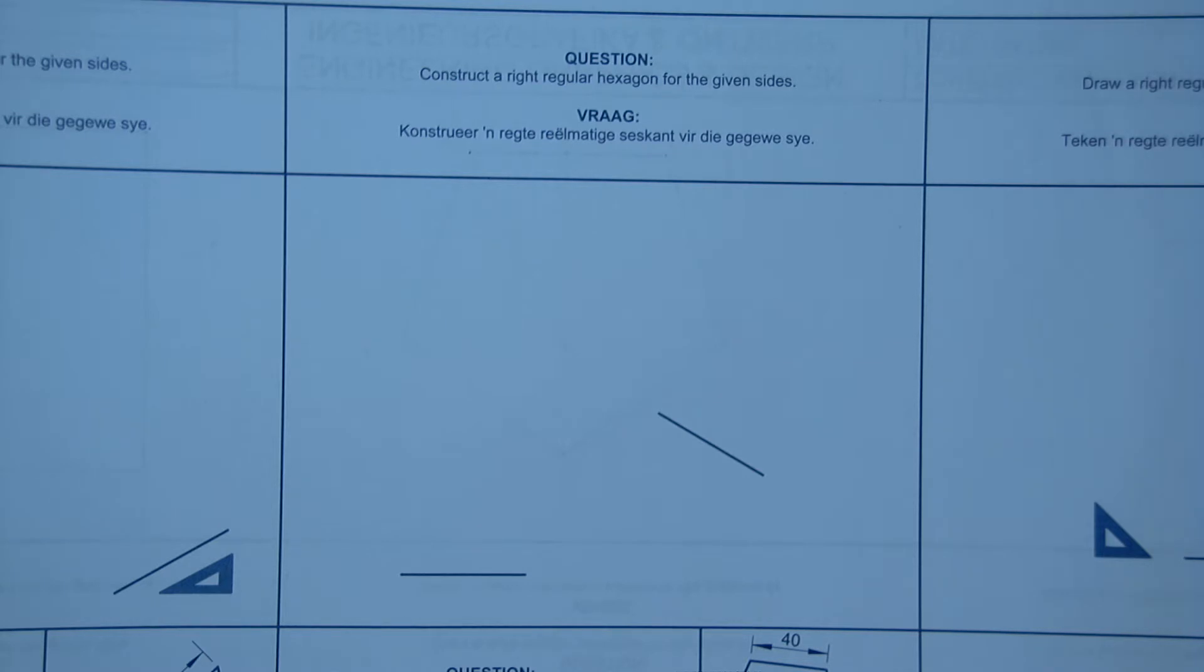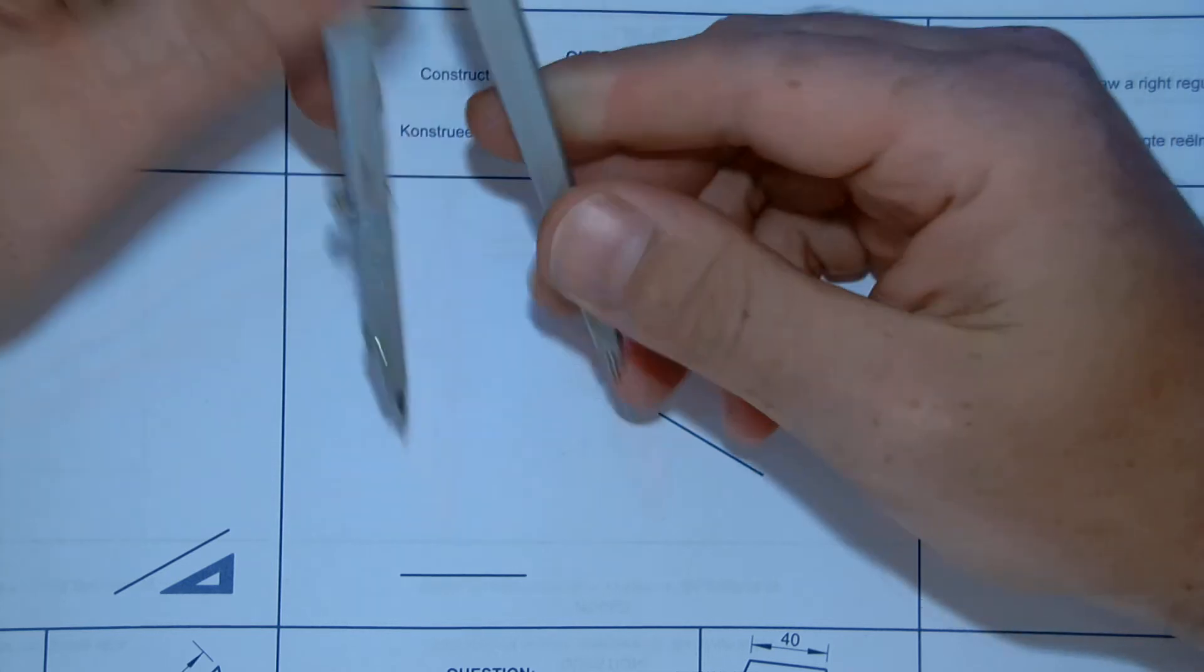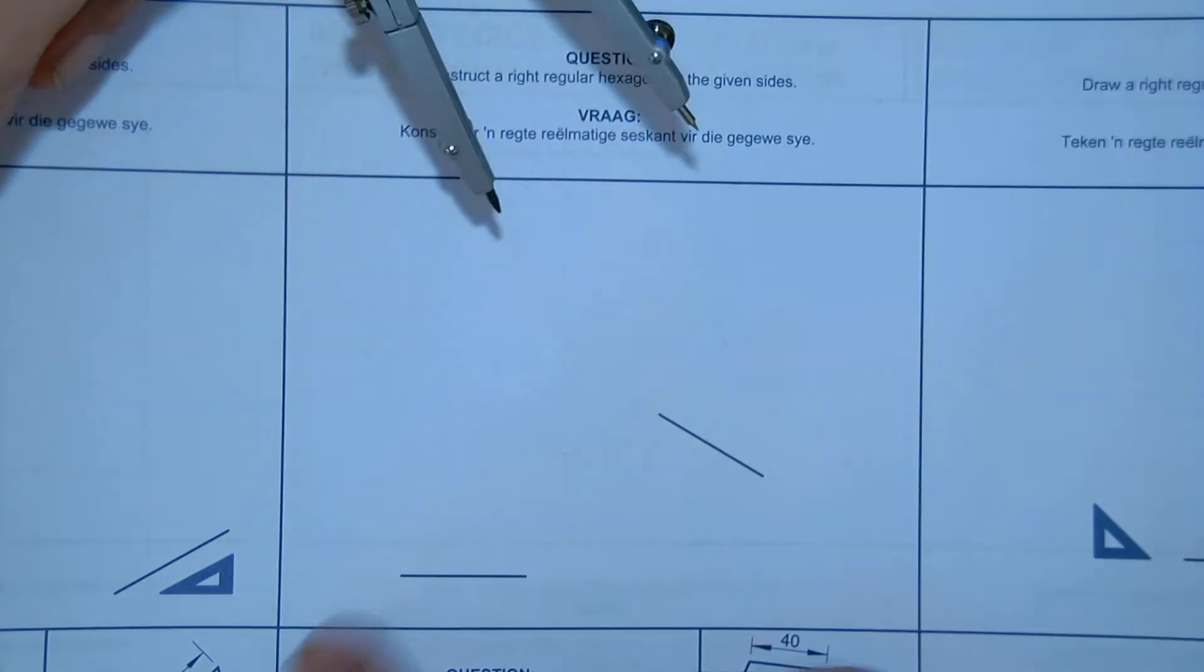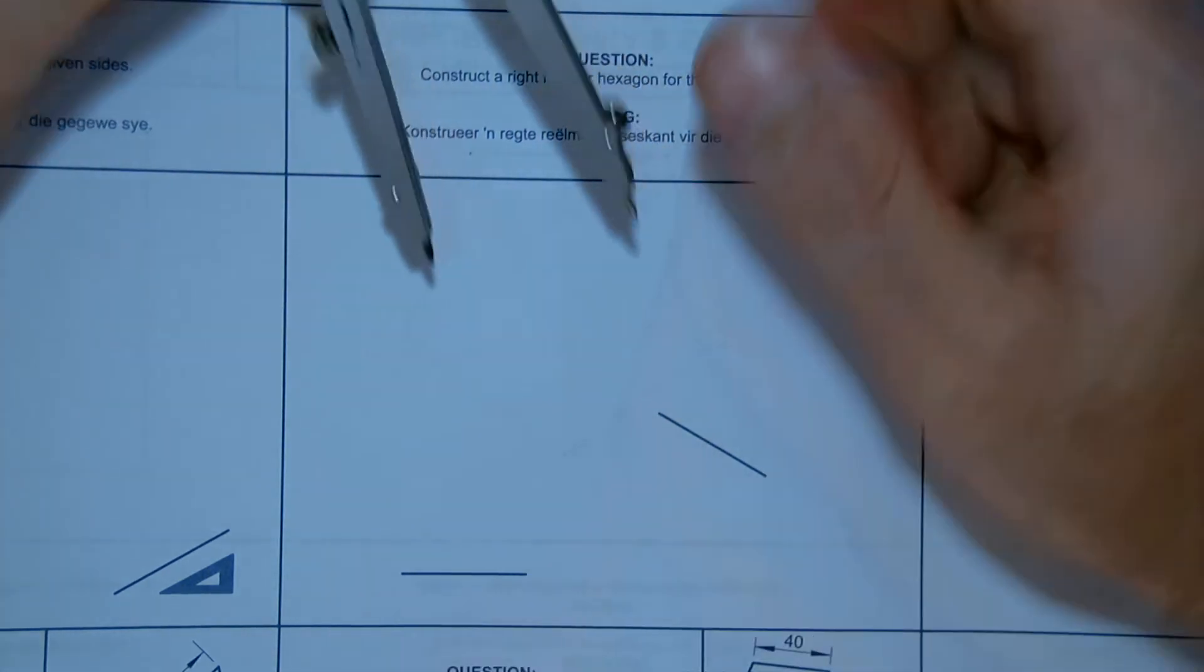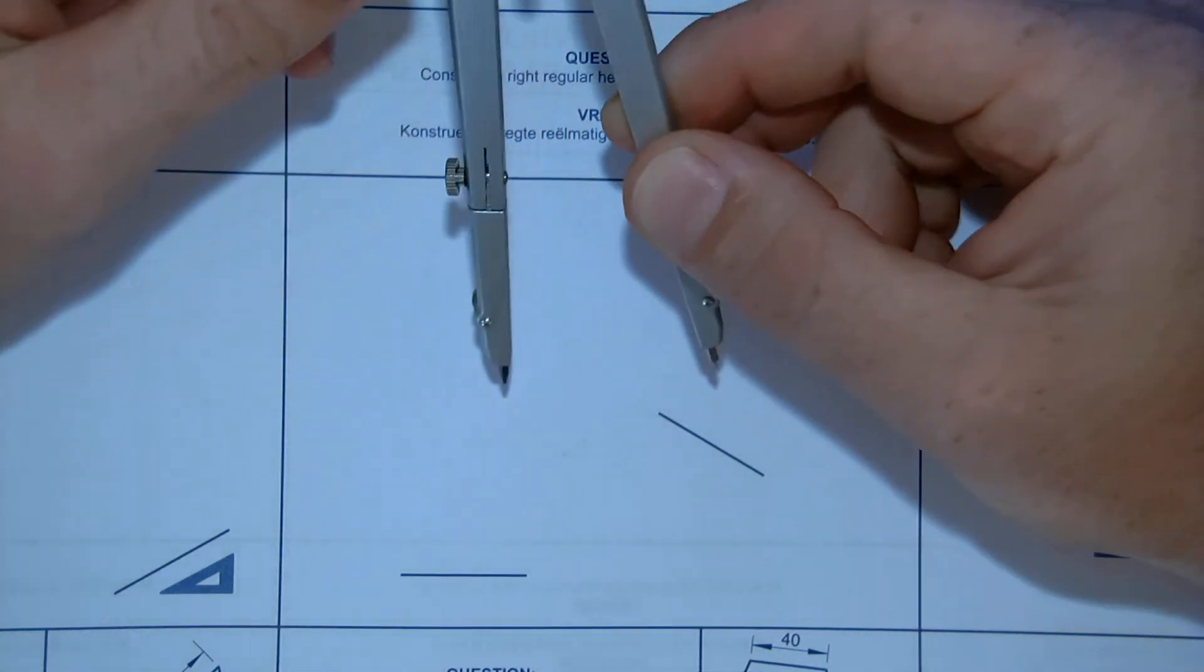So, I'm going to show you now how to do this hexagon by only using your compass. Now, one thing that you have to know about your hexagon is one side of a hexagon equals the radius of the circle where a hexagon fits into.